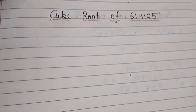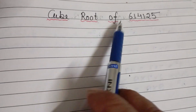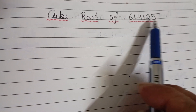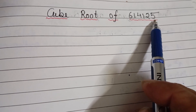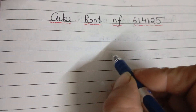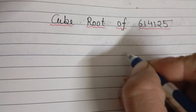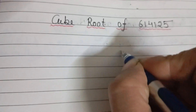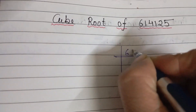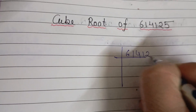Hello students, today we learn how to find the cube root of 614125 by prime factorization method. So first we do the prime factorization of this number — the prime factor of 614125.